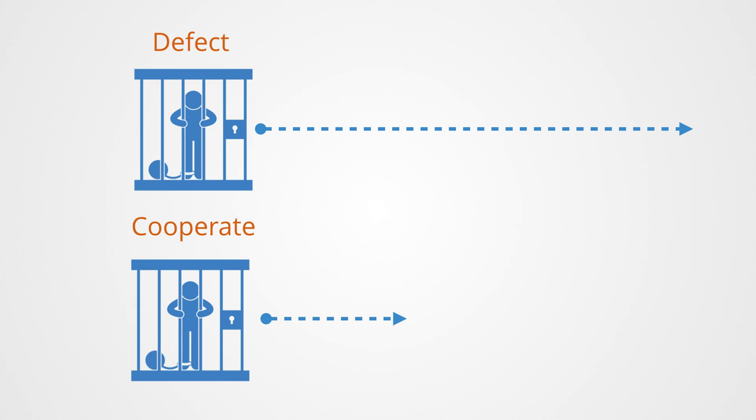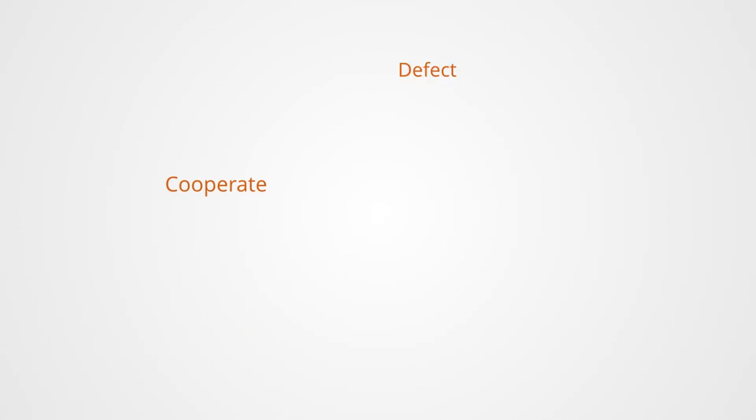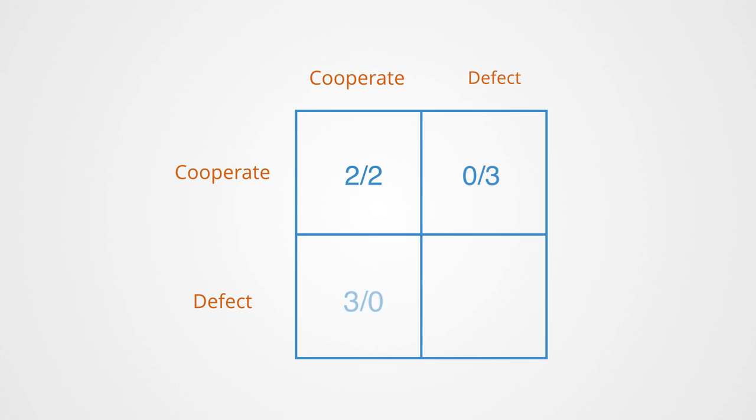The prisoner's dilemma has a similar matrix as depicted for the coordination game. However, the maximum reward for each player is obtained only when the players' decisions are different, and thus we can see the core dynamic of competition.